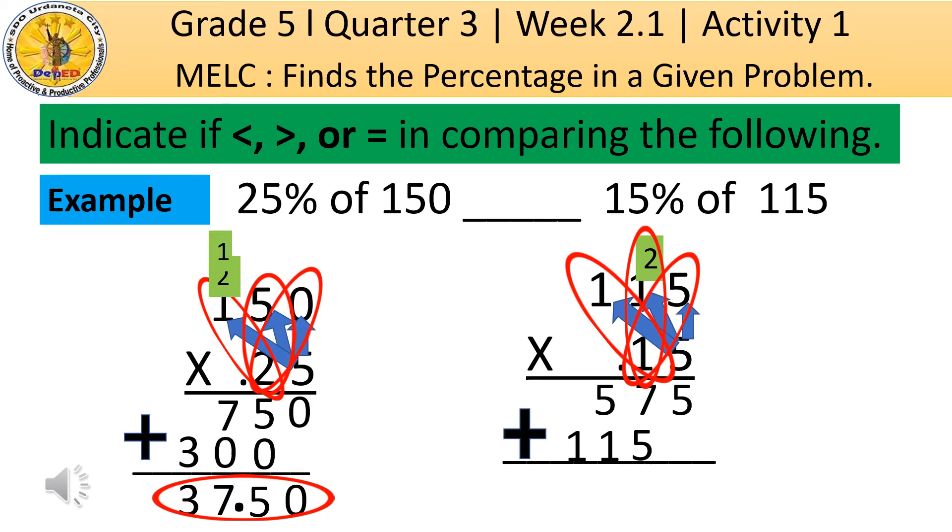After that, we will add to get the product. So, bring down 5. Then, 7 plus 5 is equal to 12. We group 1 to the next upper digit. Then, 5 plus 1 is 6, plus 1 is equal to 7. And, bring down 1. Therefore, the product of 15% of 115 is 17 and 25 hundreds.